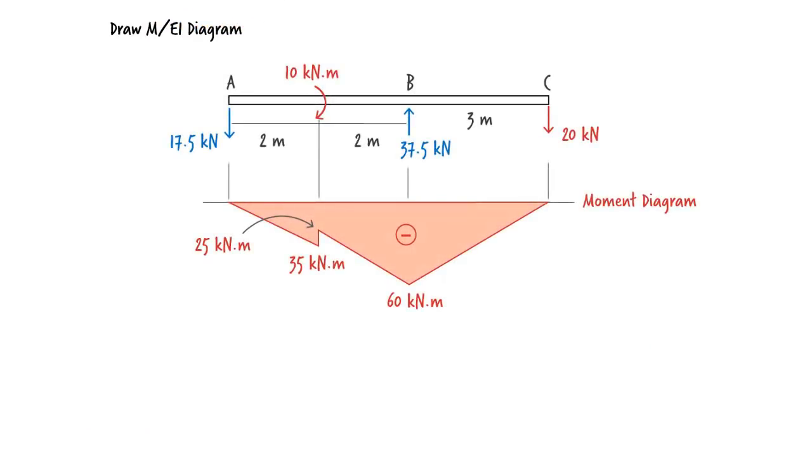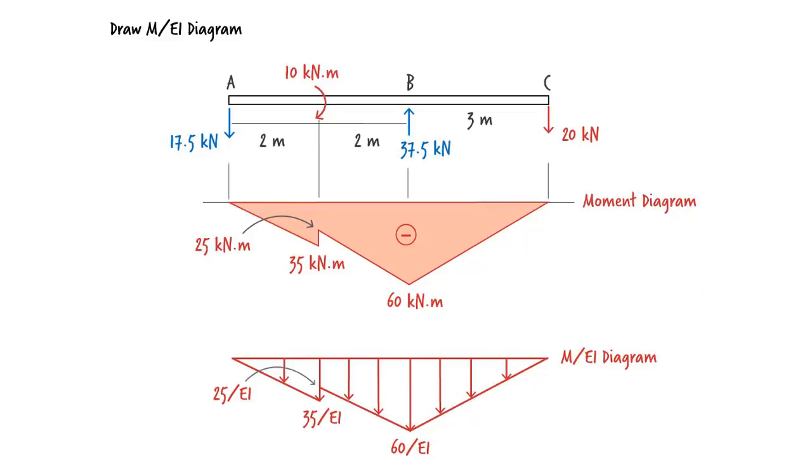We now need to convert the moment diagram to a distributed load to be placed on the conjugate beam. This is done by dividing M by EI. Since moment is negative, we treat this as a downward force on the conjugate beam.